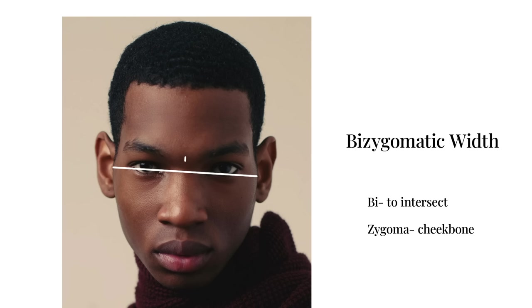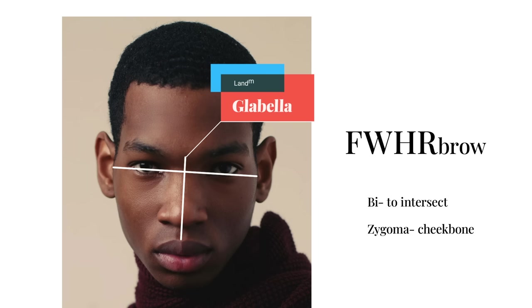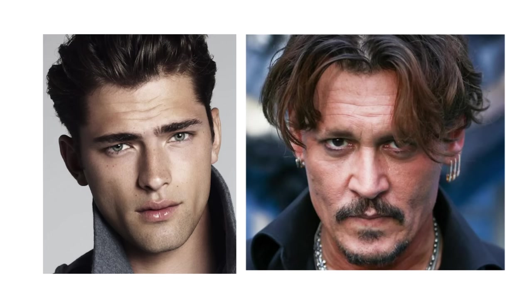The facial width to height ratio measurement most contextually relevant to attractiveness, dominance, and sex differences is called the FWHR brow measurement. This takes the measurement at the low to mid eyebrow. You can see how this would lead to a more elongated midface region, as higher set eyebrows space out the length of one's midface. Men usually have eyebrows closer to their eyes and would have a higher width to height ratio on average. Johnny Depp and Sean O'Pri are good examples of high FWHR due to their low brows and wide facial structure.